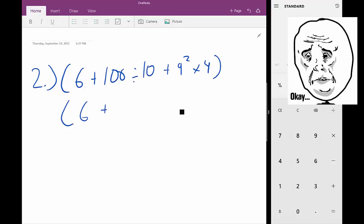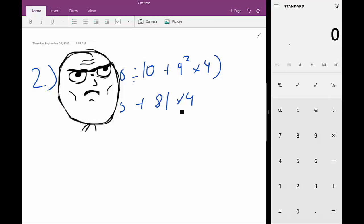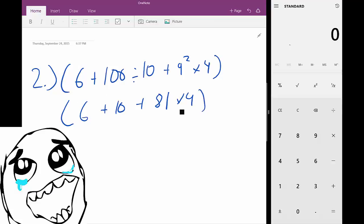Alright, let's simplify that a little bit. 6 plus 10 plus 81 times 4. That's 9 times 9 is 81 times 4.